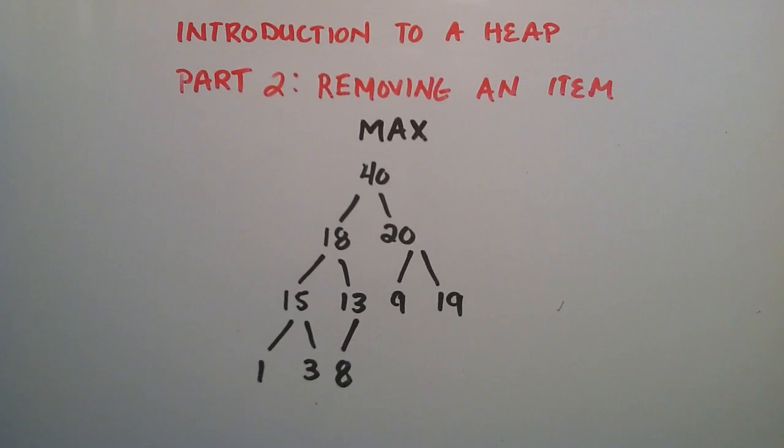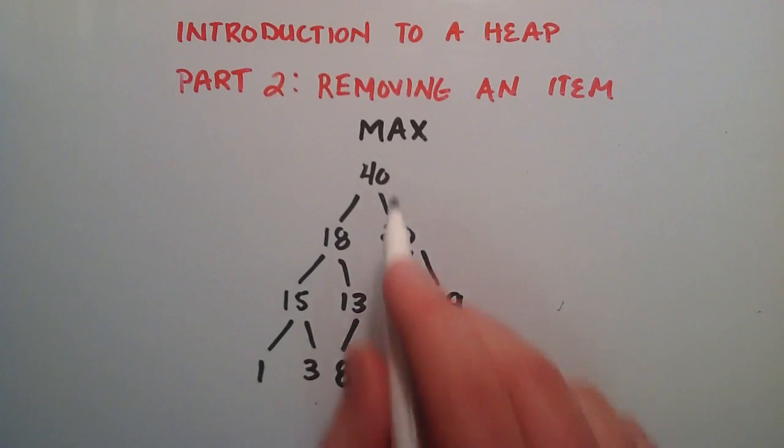Hey everybody, this is Paul. Welcome to part 2 in introduction to a heap data structure. So for this example I'm going to be removing an item from a heap. So I've got a max heap here, and once again a max heap is a heap where all the parent nodes are greater than the children nodes. So you can see that's the case all the way down the list. Each parent is greater than its children.